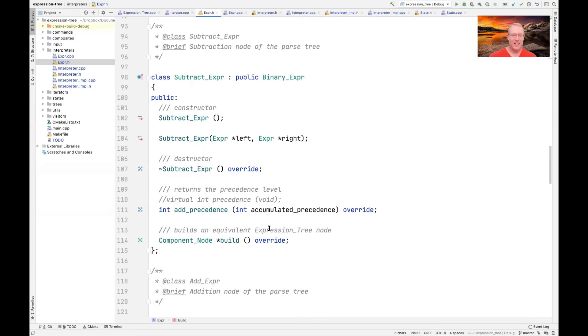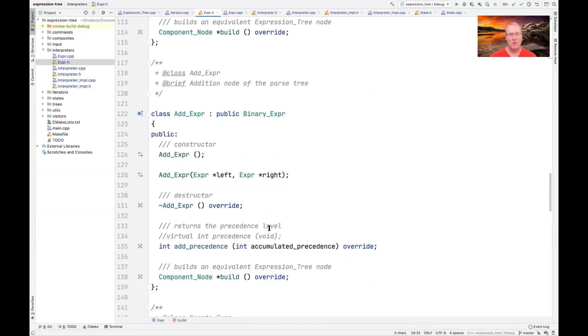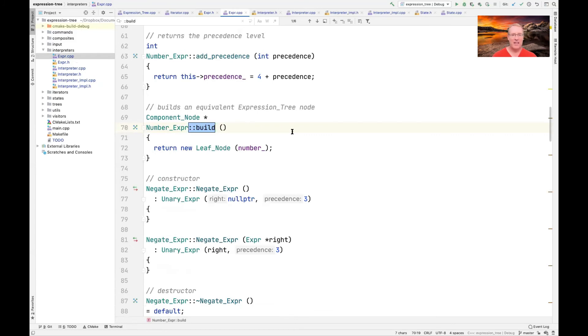Subtract expert has a build method. Add expert has a build method. They all have build methods, as you can see here. And if we actually look at the build methods, they all do very simple things.